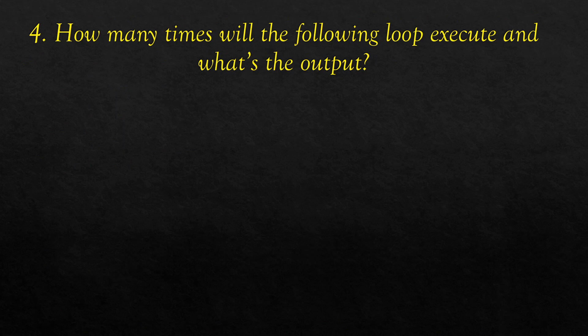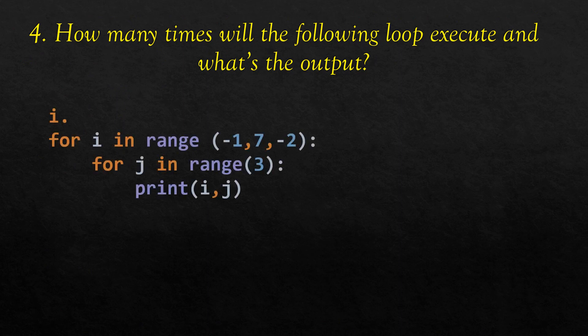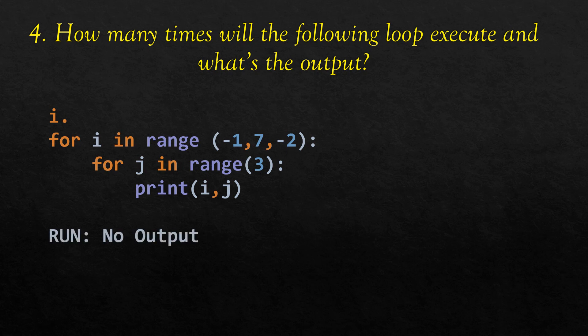The question asks how many times the loop executes. For i in range(-1, 7, -2), the step value is -2, so values decrement: -1, -3, -5, never reaching 7. Therefore the outer loop doesn't execute, the inner for j in range(3) never runs, and there is no output.